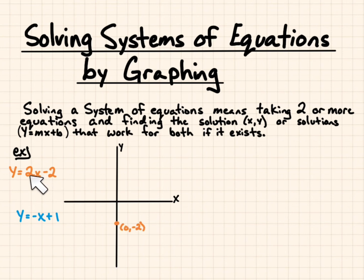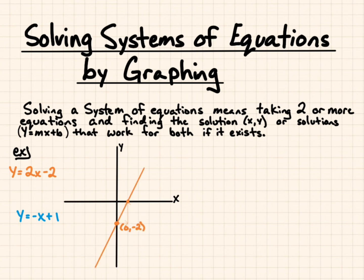Then we follow our slope. Our slope is 2, so that means for every 1 positive in our x-direction, we go 2 in our y-direction. And we'll graph that line.